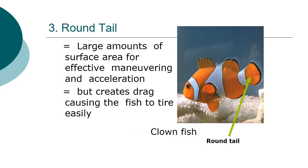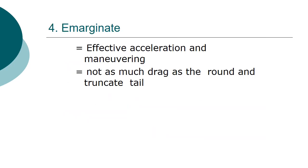The round tail has large amounts of surface area for effective maneuvering and acceleration, but creates drag causing the fish to tire easily. This is the picture of the clownfish, in which you can see the round tail. The marginate tail is effective for acceleration and maneuvering, with not as much drag as the round and truncate tail.